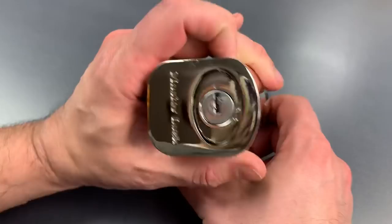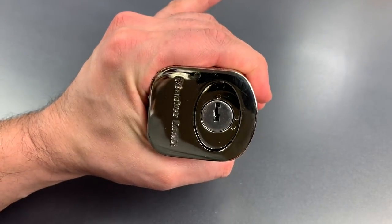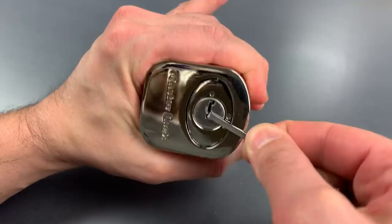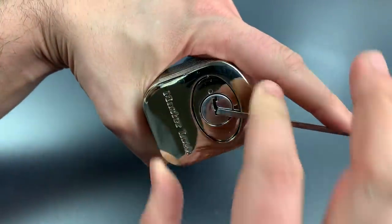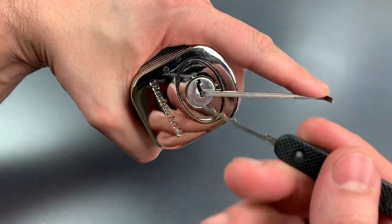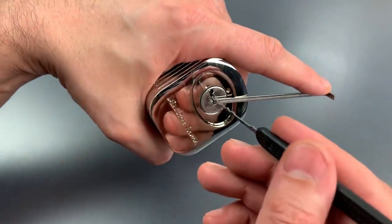If we look back here, we can see that the keyway is covered with a shutter. That can be held open with the tension tool. And I'm going to be using one of these wave rakes.